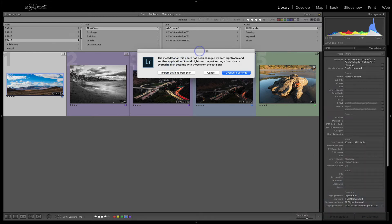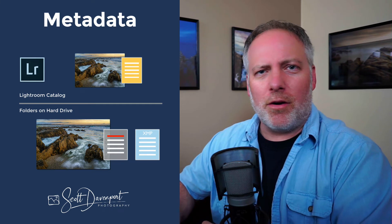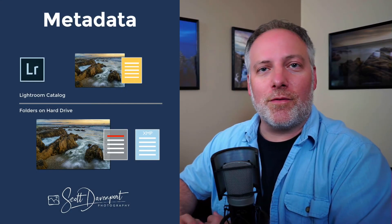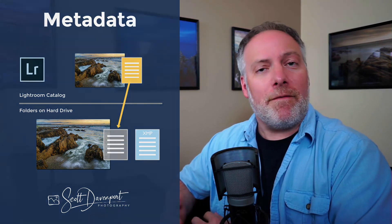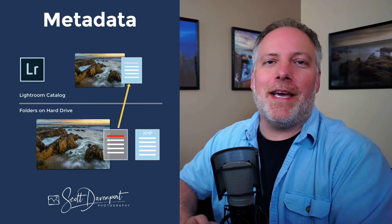The other two choices are: import settings from disk, or overwrite settings. In my world, my Lightroom catalog is the gold master — the source of truth. Any changes I make to metadata, keywords, version names, copyright information, star ratings — my Lightroom catalog is authoritative. So I click 'Overwrite Settings' to take what's in the catalog and overwrite the disk settings. If on the other hand you've done something outside of Lightroom purposely and need to bring that into your catalog, choose 'Import Settings from Disk' — it treats the image as the source of truth and pulls the data into your catalog.